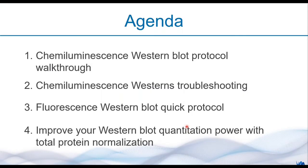This is our agenda for today's session. Firstly, we will walk through the protocol of a chemiluminescence Western blotting. Then, some general troubleshooting tips on chemiluminescence Western. Then we will look into a quick protocol on fluorescence Western blot, so you would roughly know how it works. And finally, if you have been doing chemiluminescence Western a lot, how could you improve your Western blot quantitation power with total protein normalization? This is very useful if you are trying to answer quantitative questions — meaning you want to relatively compare two or more groups' expression, and you need accurate comparison.